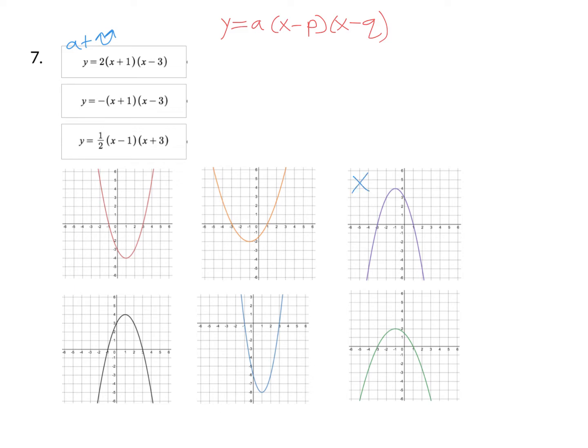So it's not the purple one, it's not the black one, and it's not the green one. Now we've narrowed it down to three. So the next step is going to be to find the x intercepts.